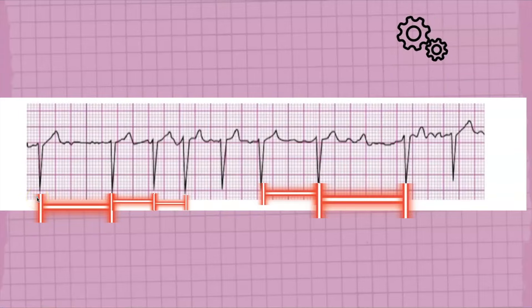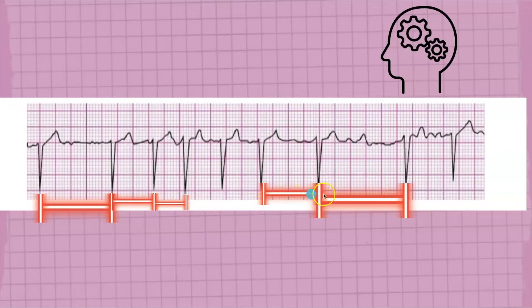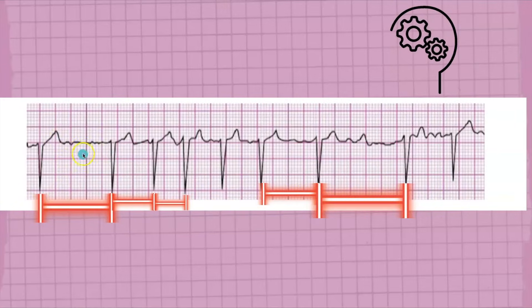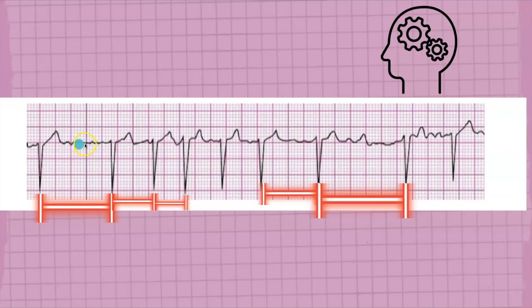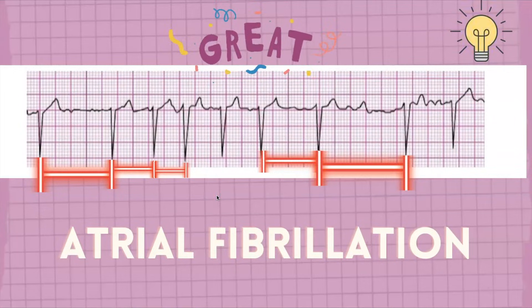Maybe you're thinking — is this SVT, supraventricular tachycardia? SVT is an irregular rhythm. Look at your R-to-R interval: it's all over the place — this one is long, this is short, this is shorter, this is medium, this is longer. The R-to-R interval is irregular. Also, you don't really see clear P waves — they're not clearly discernible. If you said atrial fibrillation, you are correct.